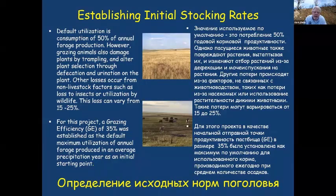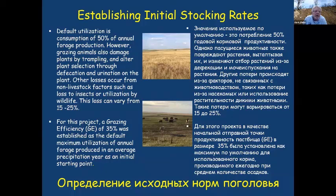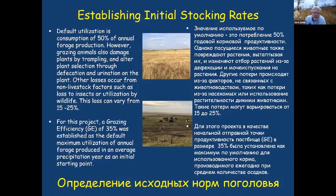Now that we've measured our biomass, we get into how to actually estimate initial stocking rates. The default utilization is generally established at 50% of annual forage production. However, grazing animals also damage plants by trampling and can alter plant selection through defecating or urinating on them. Other animals — insects such as grasshoppers or locusts, ground squirrels, marmots, and ants — can also consume or remove standing biomass. To account for this and to start with a conservative estimate, we reduce available standing biomass for forage consumption to 35%.